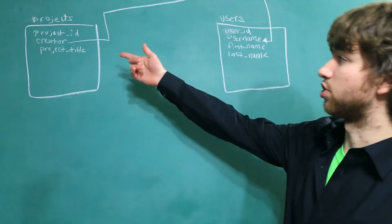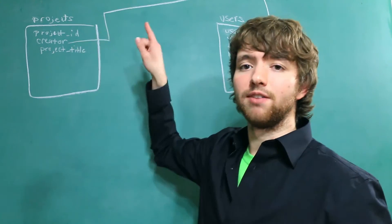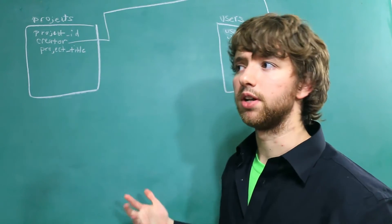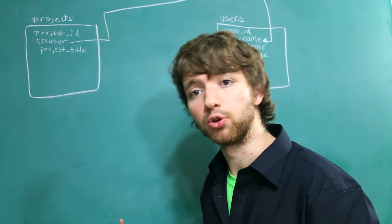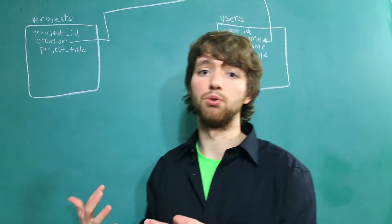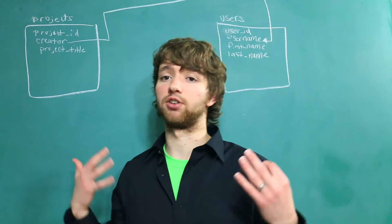For example, in this situation, a project can only have one creator. That's because it's a column inside of the table. If we wanted to where a project can have multiple creators, we would need to take that out into a separate table and name it like project creators, for example.